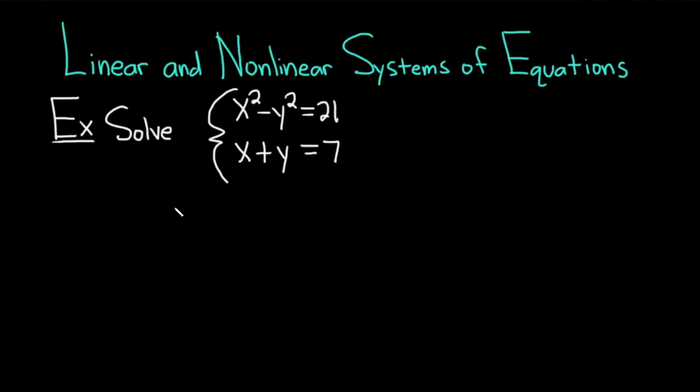Hi everyone, it's the Mathsorcer here with Chegg. In this video, we're going to be discussing linear and nonlinear systems of equations. Our example is to solve the system where x squared minus y squared equals 21 and x plus y equals 7. Let's go ahead and work through this solution.